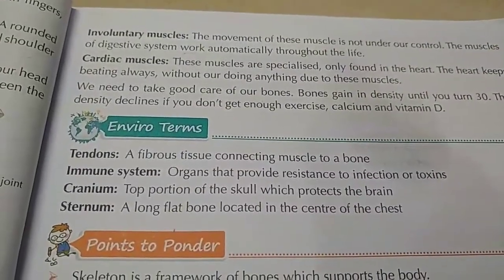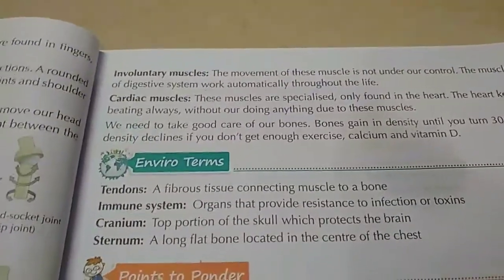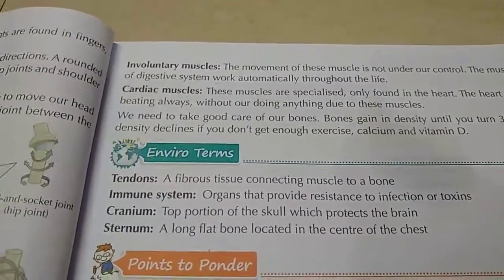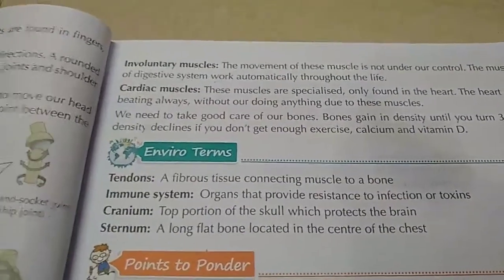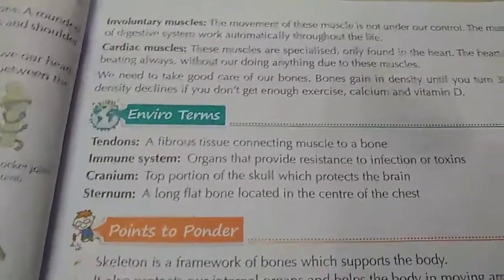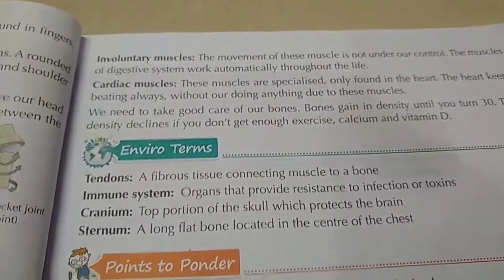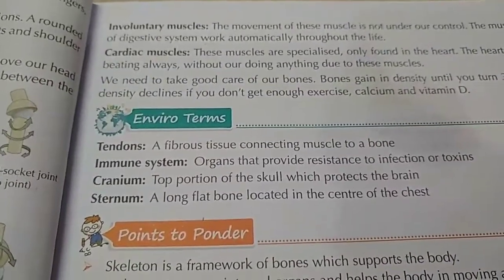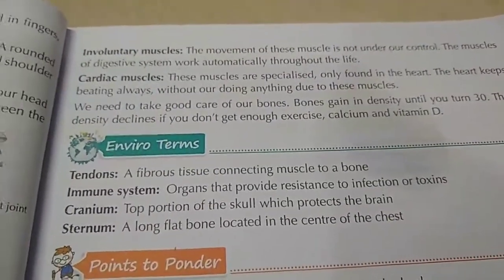The next one is involuntary muscles. The movement of these muscles is not under our control. They work automatically throughout life. For example, our digestive system — digestion has its own process that cannot be controlled by our will.